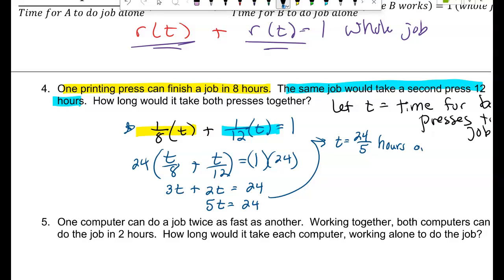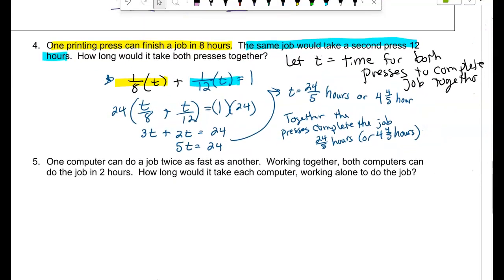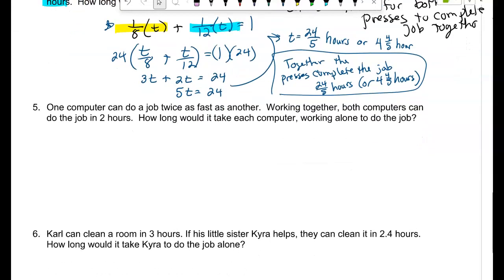And you should do this as a complete sentence. But what's another way of writing this if you don't want to write it as a mixed number? It's 4 and four-fifths of an hour. Together, the presses complete the job. You can say 24 over 5 hours or 4 and four-fifths of an hour.